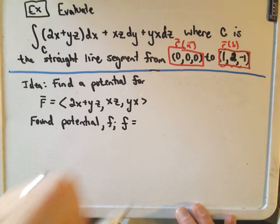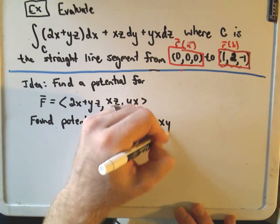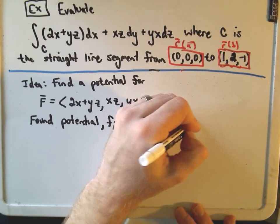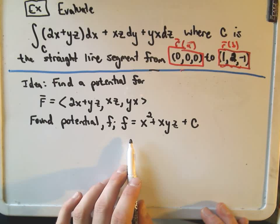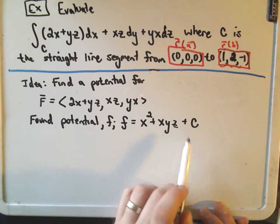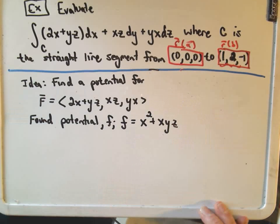We found a potential little f for this vector field in a different video, and we found that little f was the function x squared plus xyz plus c. And you can actually use any potential function. So let's just set the constant equal to 0, and that will make computations a little bit easier.